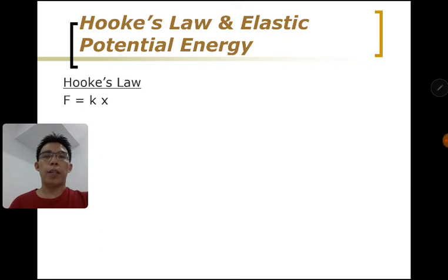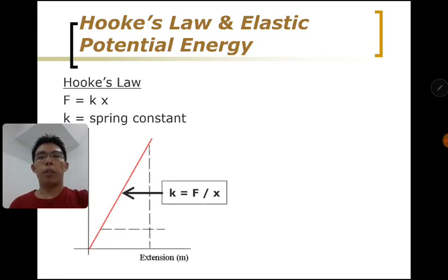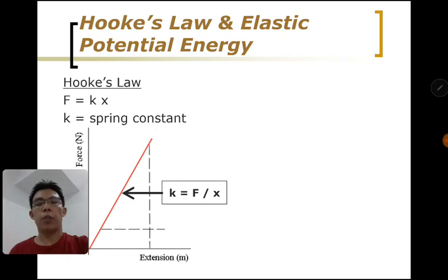F equals kx, that's the equation form from the law, and k is called the spring constant. If you plot it on a graph of force to extension, it will be a straight line, and if you find the gradient of it, it will be the spring constant.